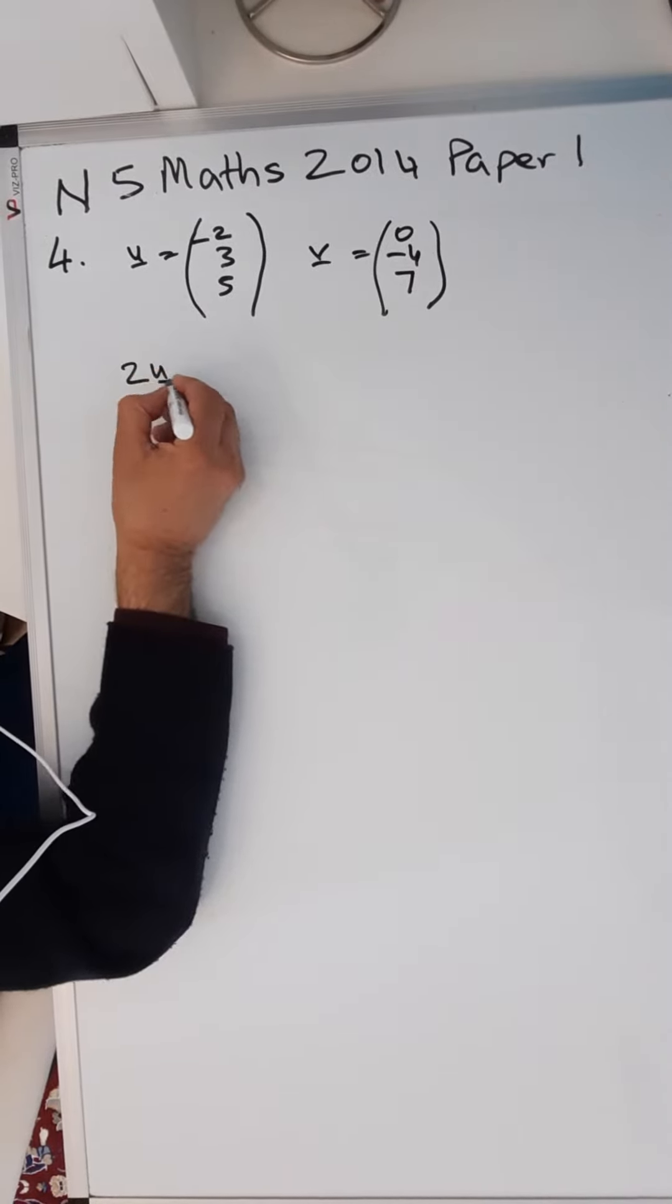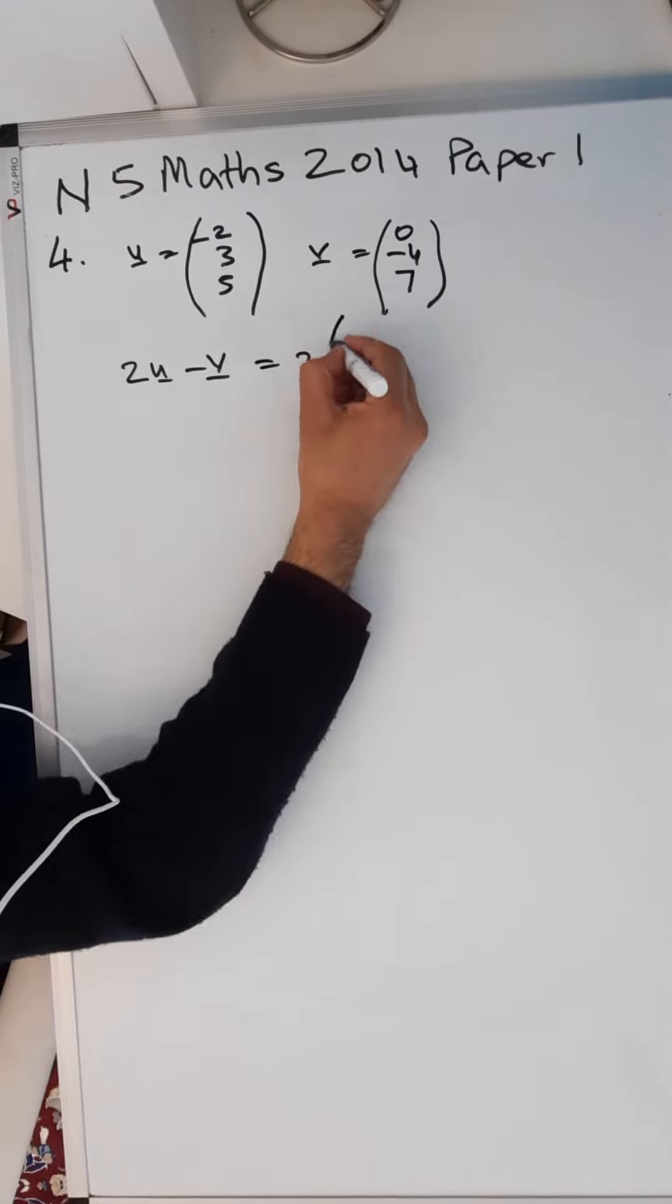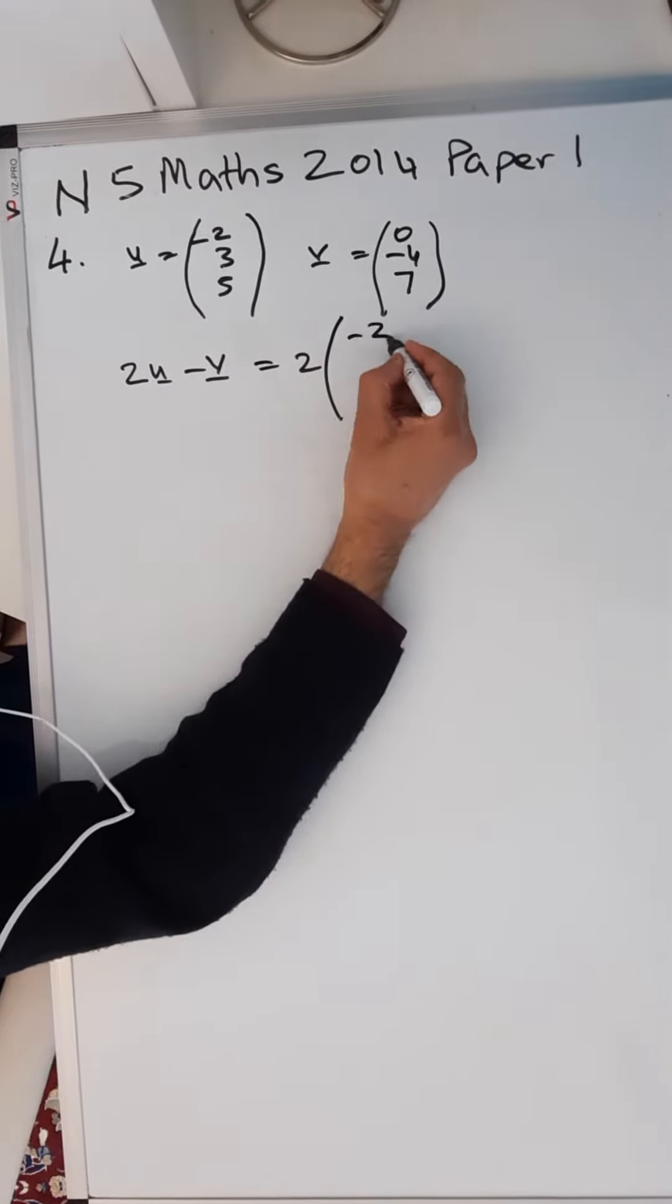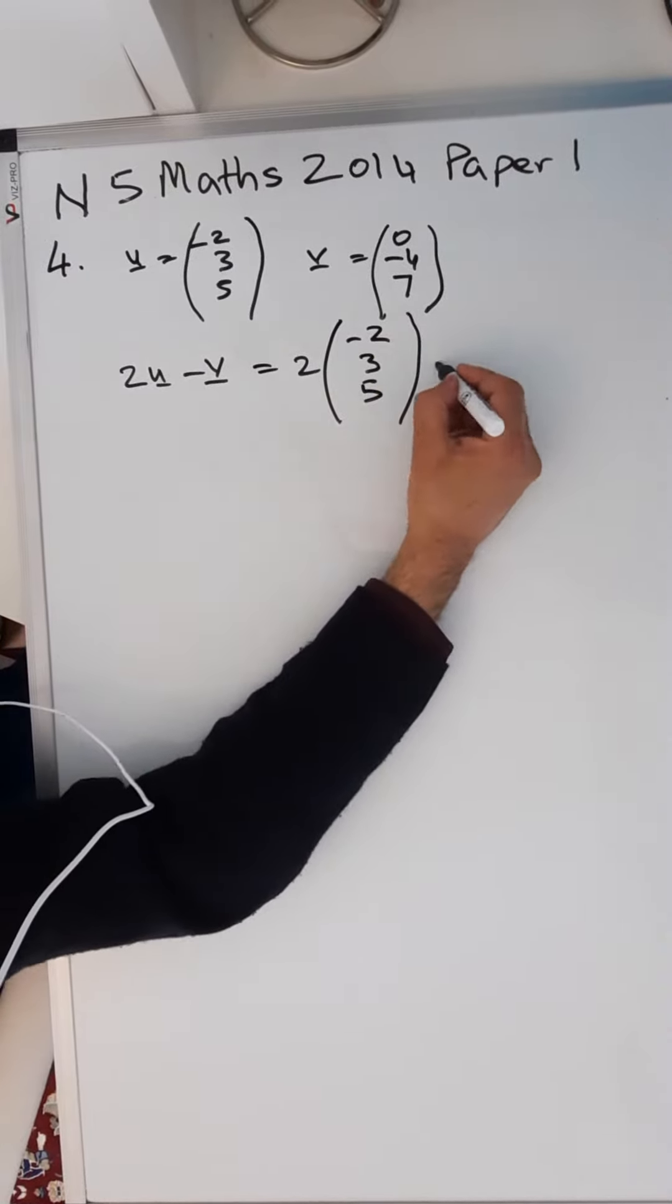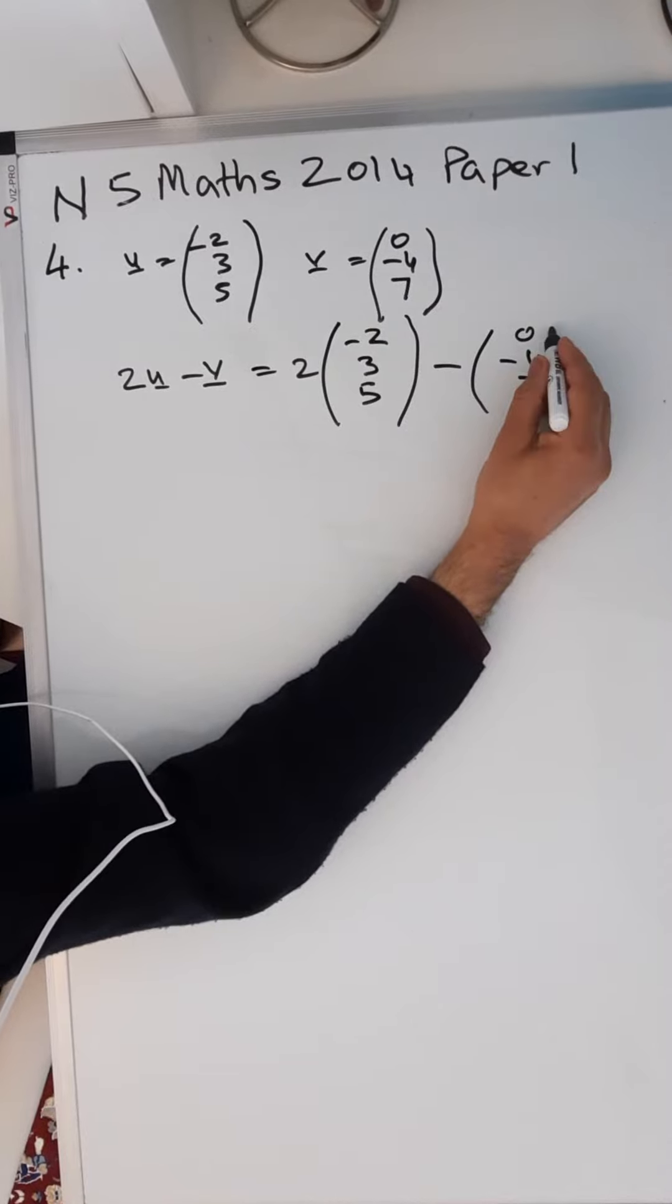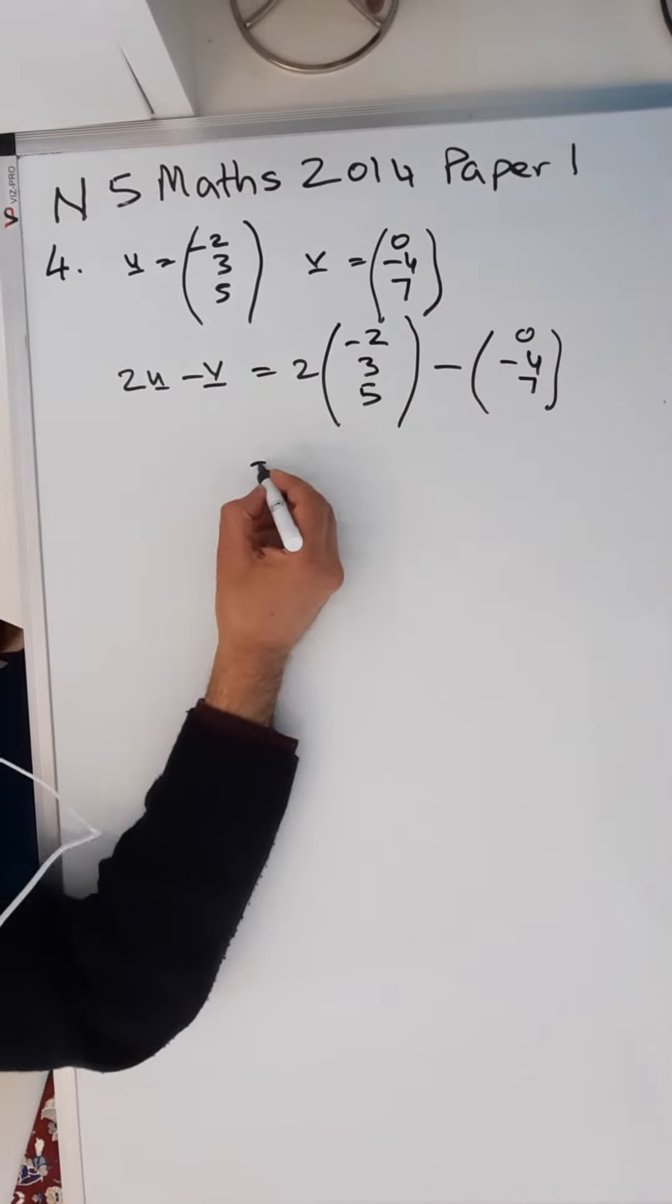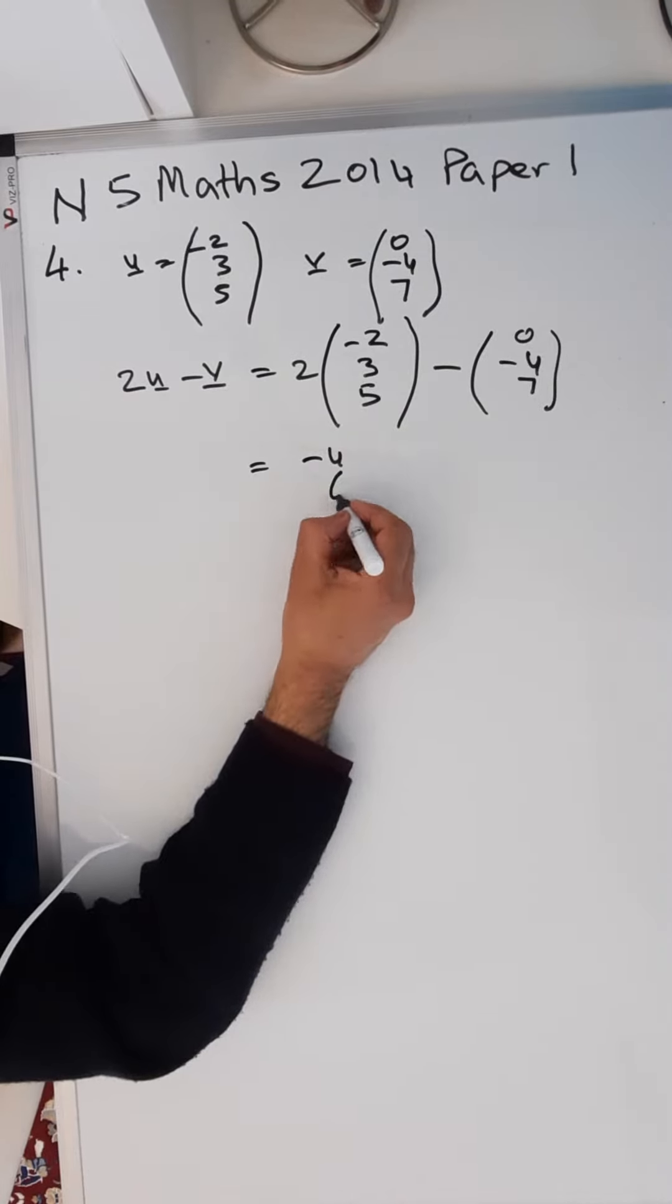Which is equal to two times u is minus two, three, five minus v which is zero, minus four, seven. Multiply this out: two times minus two is minus four, two times three is six.